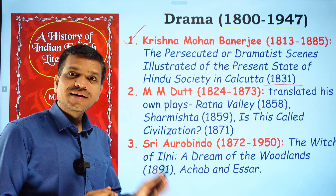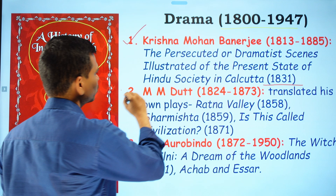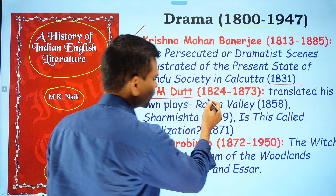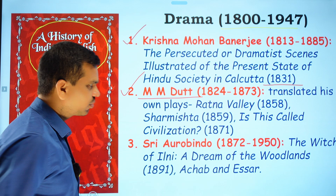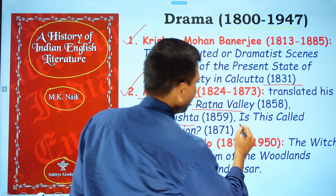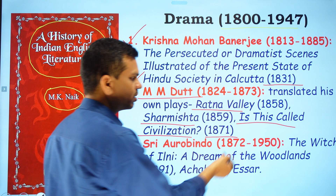Michael Madhusudan, whom we also discussed for his poetry, basically wrote in Bengali and translated his plays into English. His three translated plays are: Ratna Valley (1858), Shamista (1859), and Is This Called Civilization? (1871).